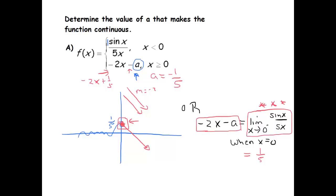And when x is zero, I have -2 times zero minus a. So this becomes -a equals one-fifth. Therefore, a equals negative one-fifth. So there's another way to get that answer, strictly using your knowledge of this limit and understanding what continuity means.